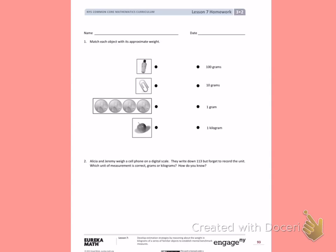Number 1. Match each object with its approximate weight. So my measurements are 100 grams, 10 grams, 1 gram, and 1 kilogram.